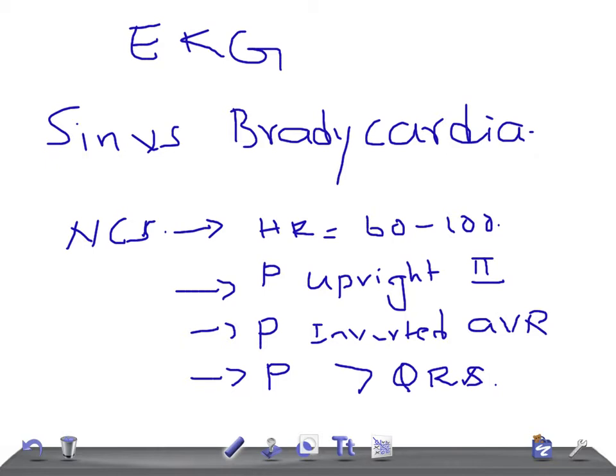Now, sinus bradycardia: bradycardia means a heart rate less than 60. So to call it sinus bradycardia, the heart rate should be less than 60 beats per minute. Since it is still a sinus rhythm, the P wave will be upright in Lead II, inverted in aVR, and every P wave is followed by a QRS complex — only the heart rate is less than 60.